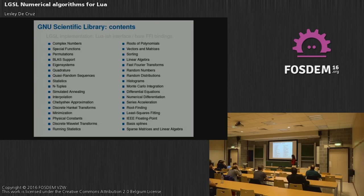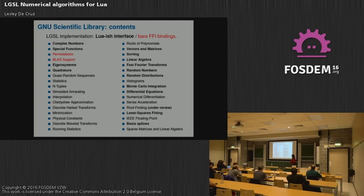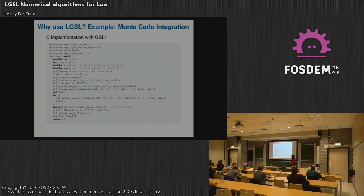Looking at the GSL website, it says the interface was designed to be simple to link into very high-level languages such as GNU Guile or Python — and of course, Lua is a notable omission there. It's a very extensive library and not everything is provided yet in LGSL. Items with a nice Lua interface are shown in bold, and bare FFI bindings are in red. The goal isn't just to provide raw FFI bindings — we really want a nice interface as well.